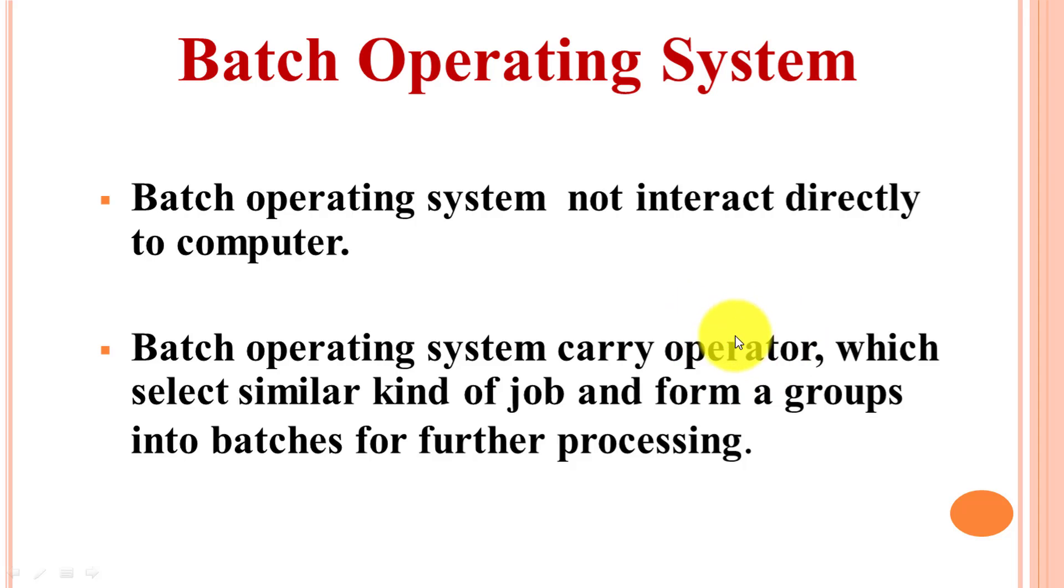The operator, also called processor, selects similar kinds of jobs which have the same needs or requirements and forms groups into batches for further processing. That's why it is called batch operating system. Now let's understand this concept with a diagram.